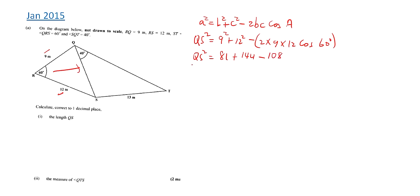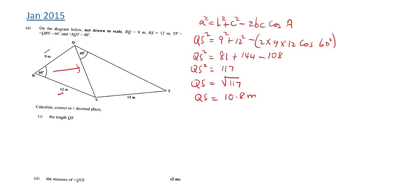Using the calculator, 2 × 9 × 12 × cos60° = 108. So QS² = 81 + 144 − 108 = 117. Therefore QS = √117 = 10.8 meters.